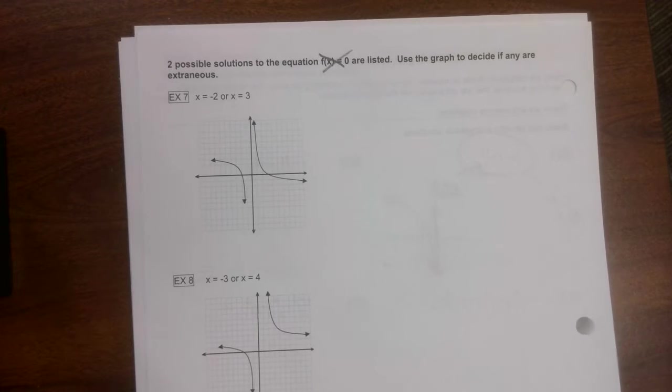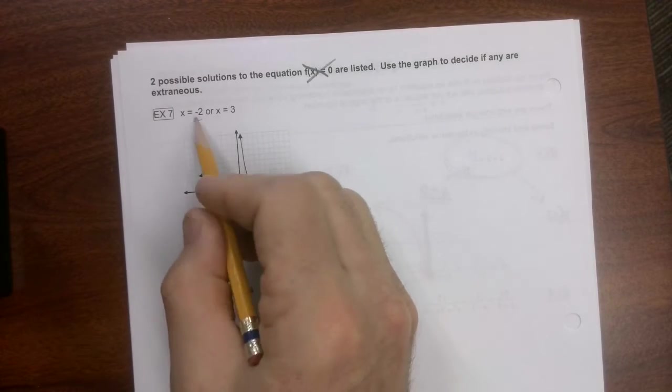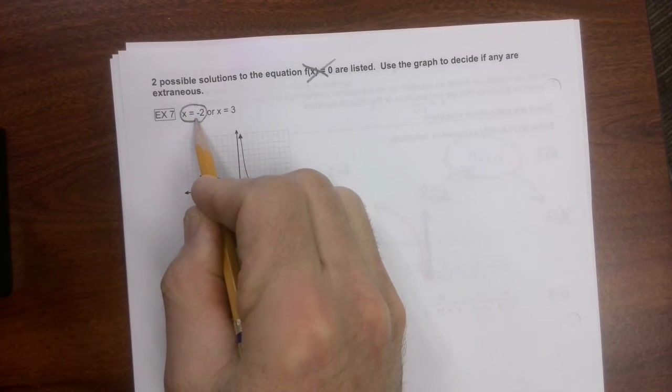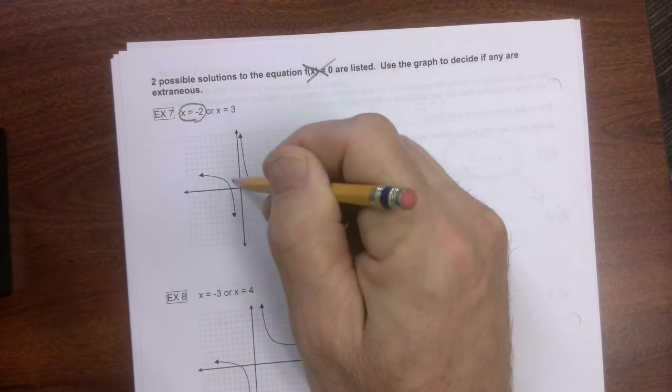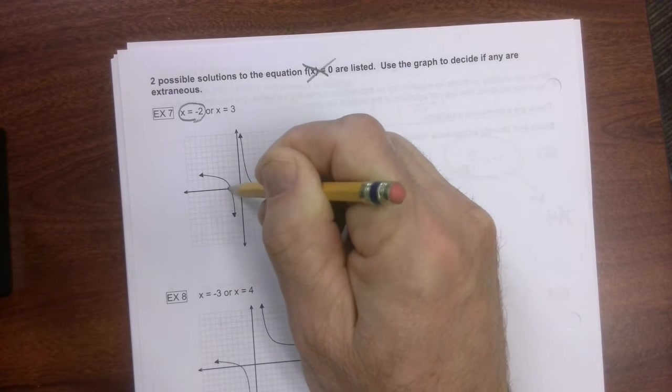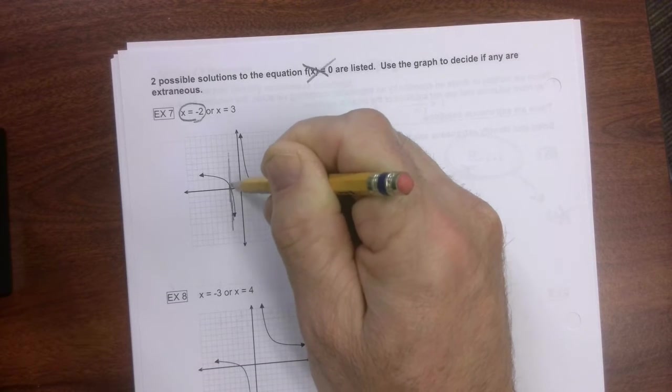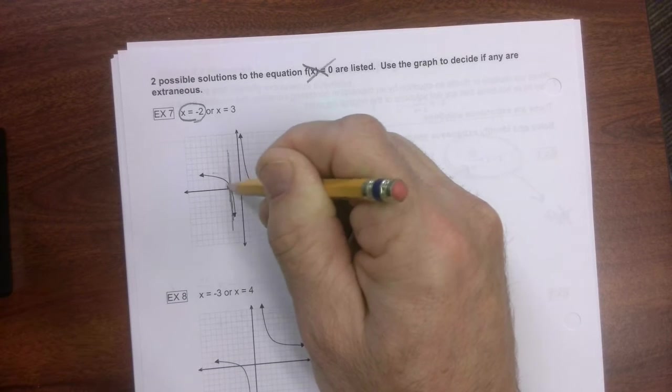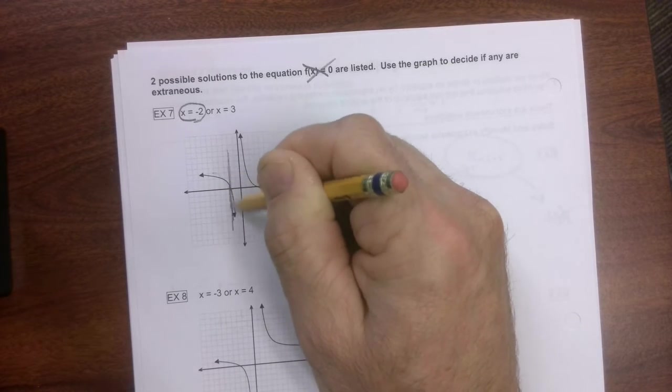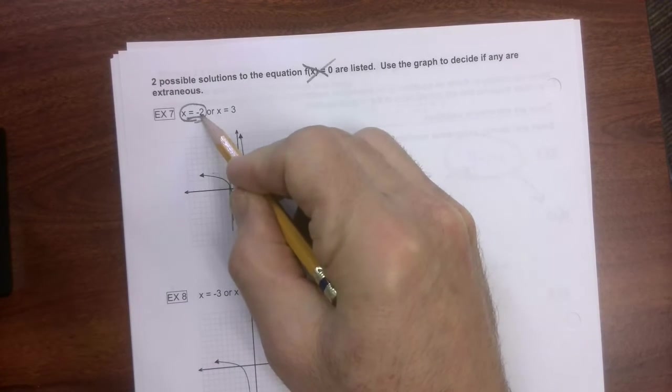With that being said, we look at this. The problem is asking us: is this extraneous? That's what it's asking you. Use the graph to decide if any are extraneous. If we graph this and go x = -2, we can see there is definitely a point where the graph crosses. So this is a solution. It is not extraneous.